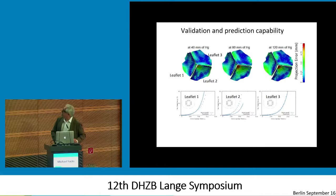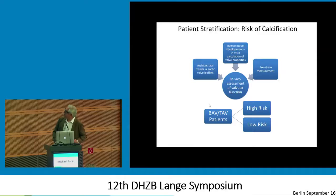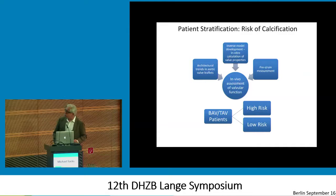We're actually able to do this, and you can see it under different loading conditions. This is something completely new that you could actually add to a diagnostic protocol. The overall idea is that we have architectural information from population averages, inverse models, and pre-strain measurements on a patient-specific basis — all pulled together in vivo to identify bicuspid and tricuspid valves that are at high risk for calcific aortic valve disease or not. There is recent data showing that the majority of patients with bicuspid valve disease actually don't exhibit dilation of the aorta, but primarily exhibit calcific aortic valve disease — so this is very important.